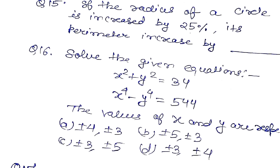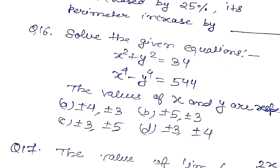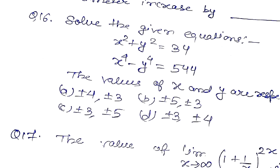Question number 16. Solve the given equations. First equation is x square plus y square equal to 34. Second equation is x to the power 4 minus y to the power 4 equal to 544. The values of x and y are respectively: plus minus 4 plus minus 3, plus minus 5 plus minus 3, plus minus 3 plus minus 5, or plus minus 3 plus minus 4.